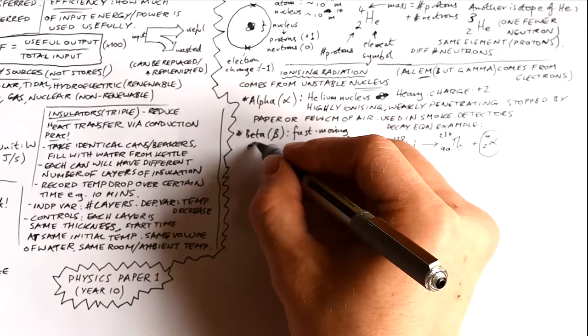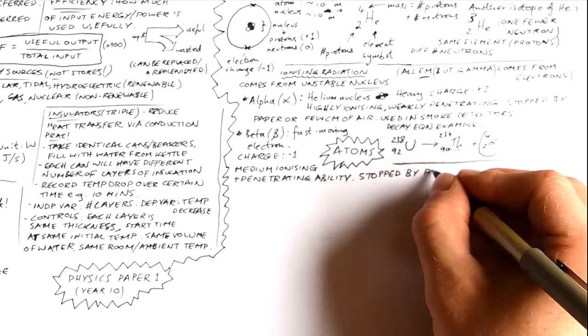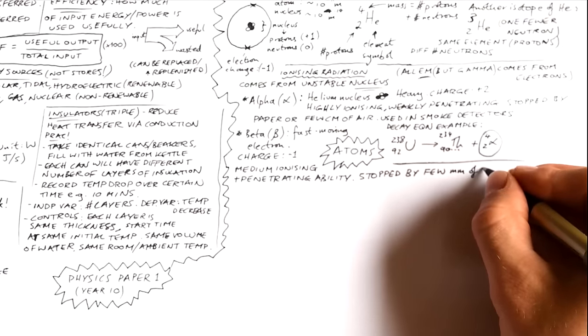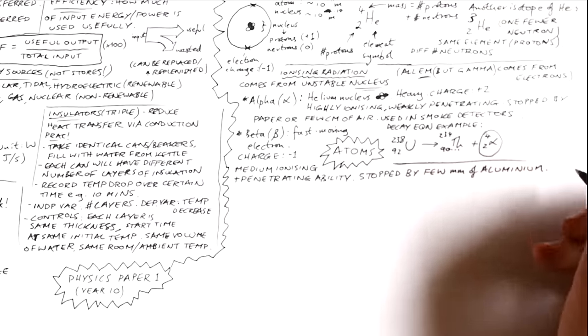Beta or beta radiation. It's just a fast moving electron. Therefore, it has a charge of minus one. It has medium ionizing and penetrating ability. It's sort of middle of the road. It's stopped by a few millimeters of aluminium. Here's an example of a decay equation, carbon-13.